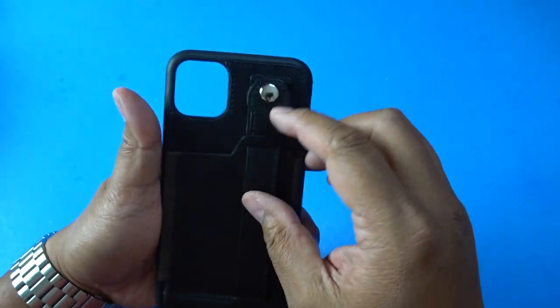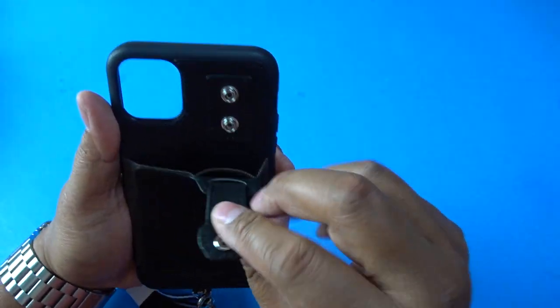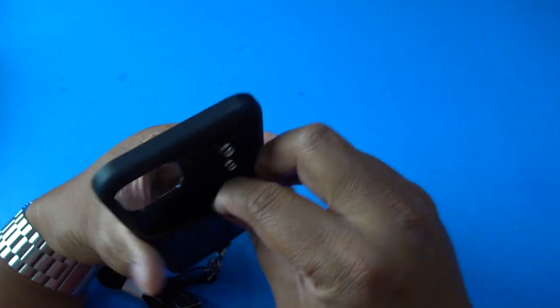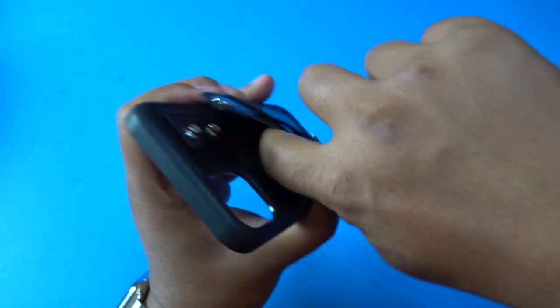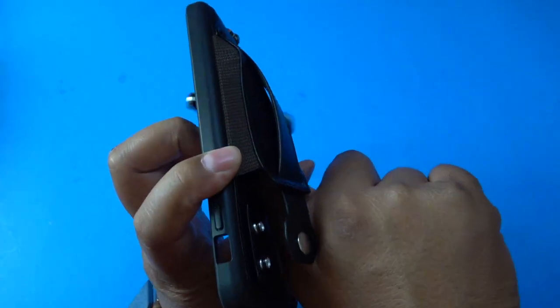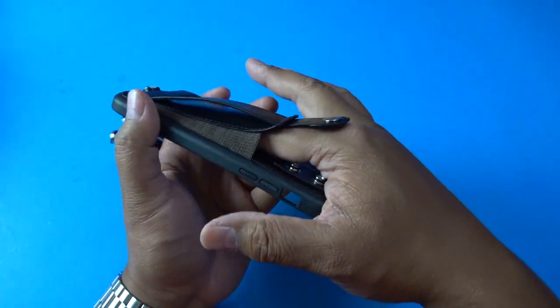And then you have a credit card slot here. If you unbuckle this you see this opening right here. Here you can put in cash and credit cards. I think in the picture they had like four credit cards and a stack of cash.